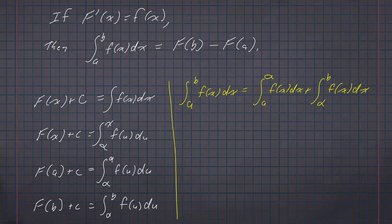And using the other property of limits of integration, I can take the negative of that first integrand and switch the order. So it's the integral from alpha to a of f(x) dx, and the integral from alpha to b of f(x) dx.